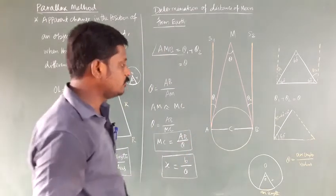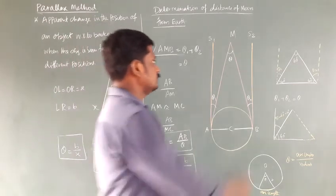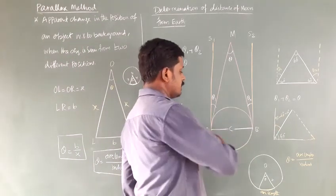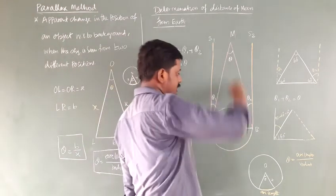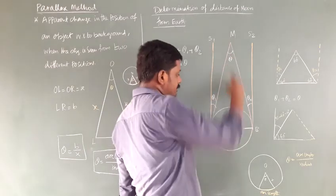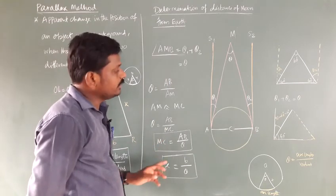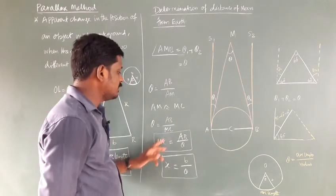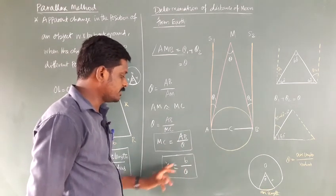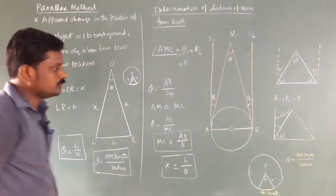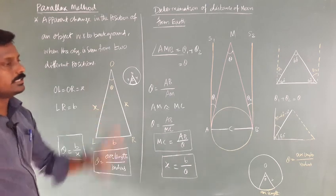So theta equals AB divided by AM. Again using the arc length formula, theta equals arc length divided by radius, so arc length is AB and radius is AM. AM is approximately equal to MC, where MC is the perpendicular distance from the Moon to the centre of the Earth. So instead of AM, write MC. We need the distance from Earth to Moon, so MC equals AB divided by theta. MC is X and AB is the basis B, so X equals B divided by theta. We are using two formulas: the arc formula and theta1 plus theta2 equals theta.